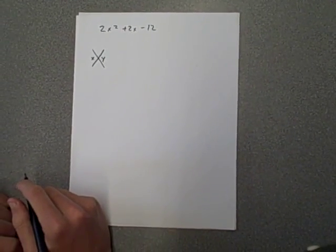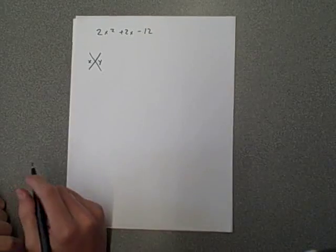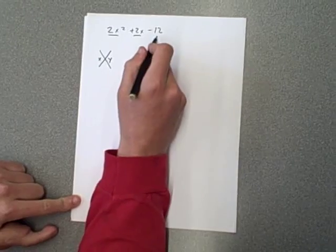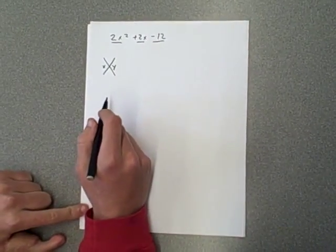All right, today we're going to be practicing factoring using the x-box method. So if we wanted to factor this equation, 2x squared plus 2x minus 12, we would use the following process.